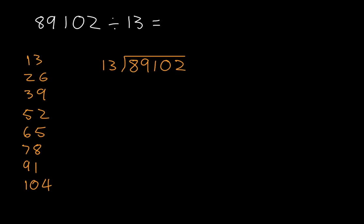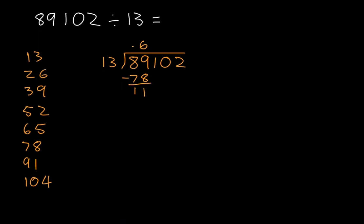13 doesn't go into 8, but 13 does go into 89, and it goes in 1, 2, 3, 4, 5, 6 times. Now 13 times 6 is equal to 78, and we subtract. 89 minus 78 is equal to 11, and we bring down the 102.